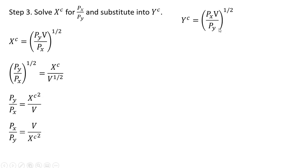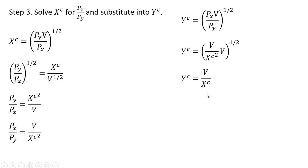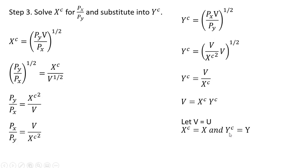Rewriting our compensated demand for good y, where we have px divided by py, we're going to substitute in v divided by x squared. Making that substitution and simplifying: v to the one-half times v to the one-half will be v, and x squared raised to the one-half power is just x. Solving for v, and letting v equal u for utility, the compensated demand for good x equals the ordinary demand for good x, and the compensated demand for good y equals the ordinary demand for good y — and that will be our utility function.